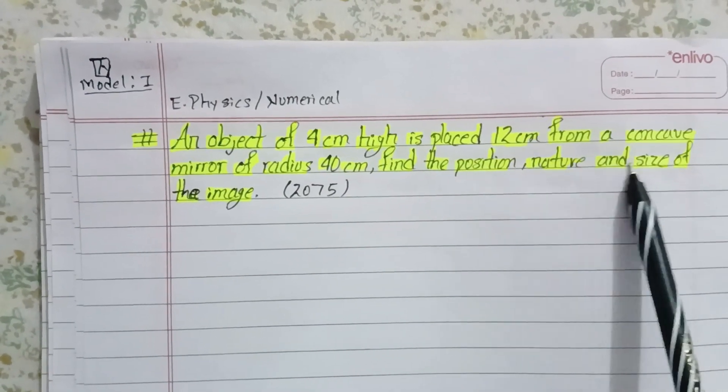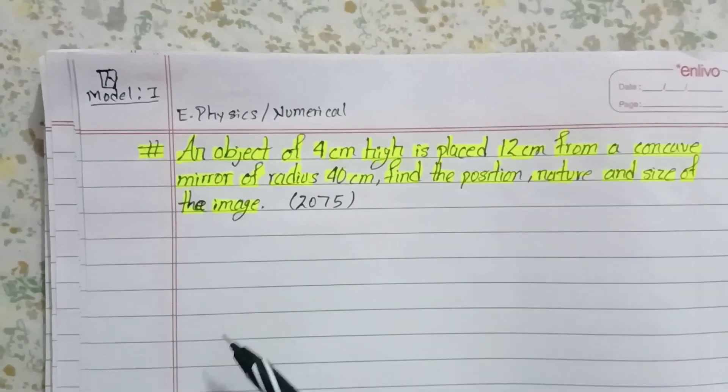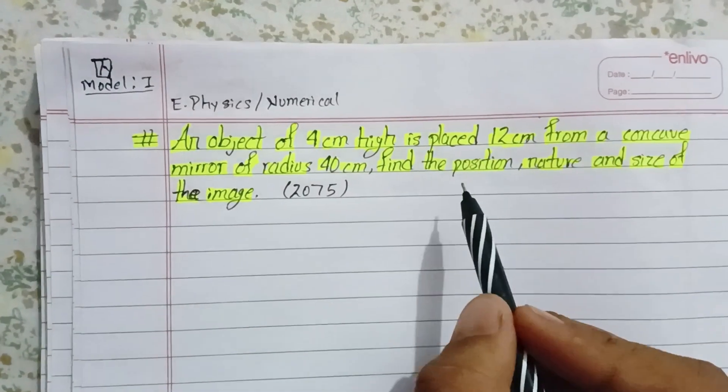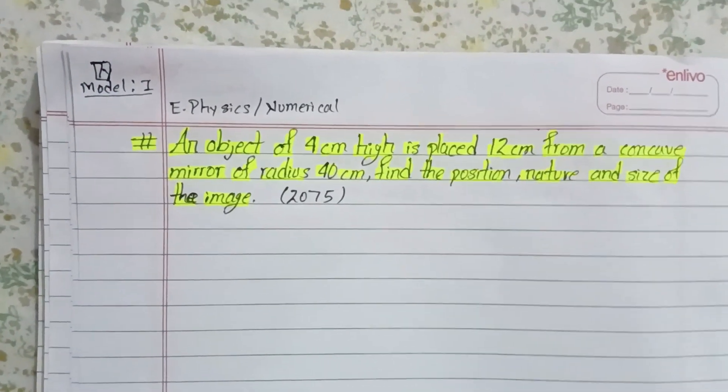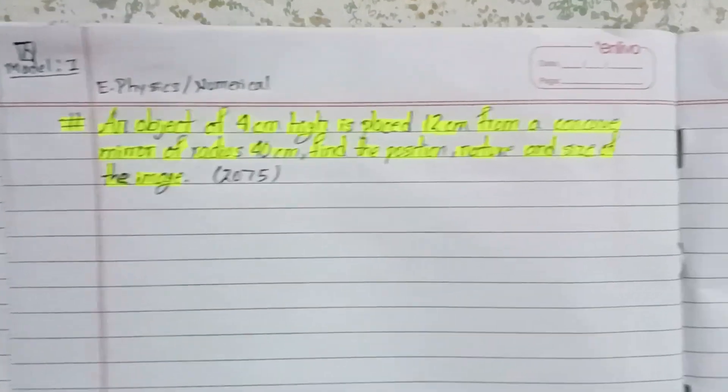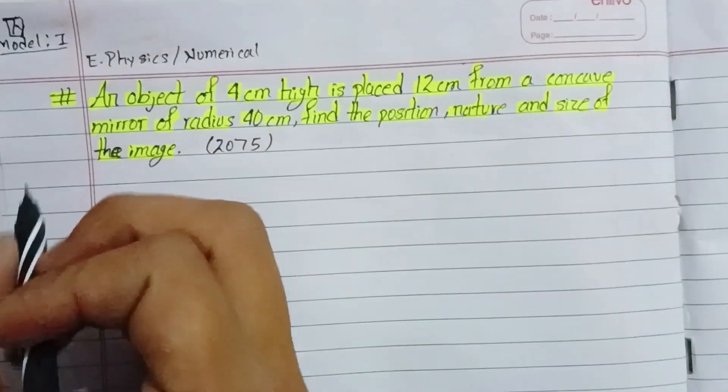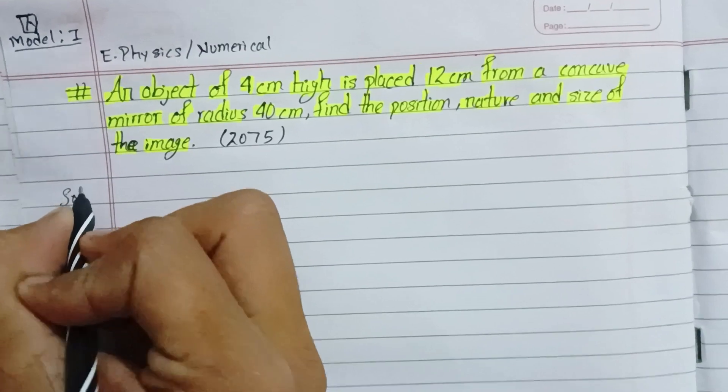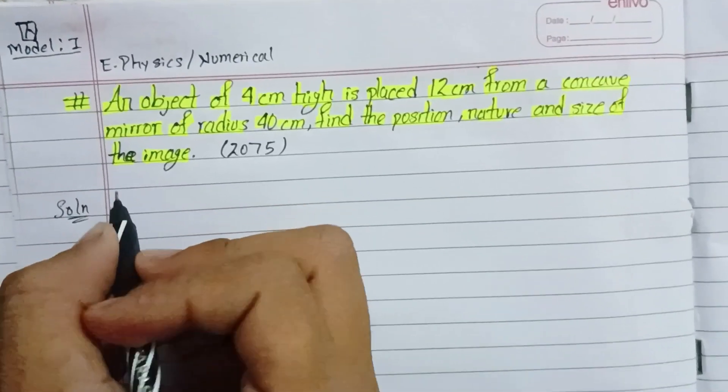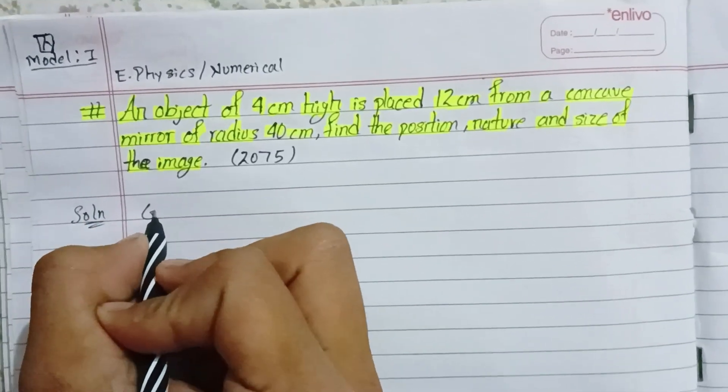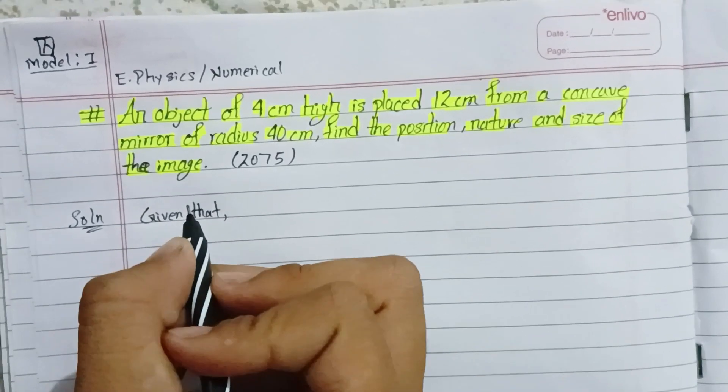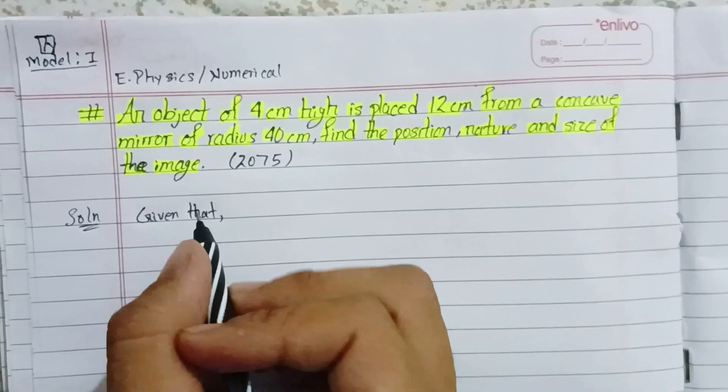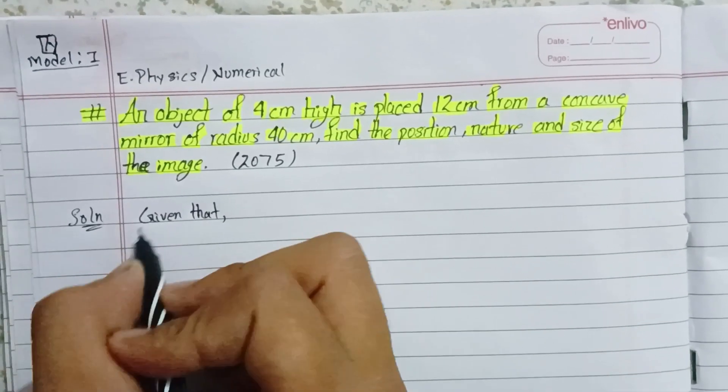Find the position, nature, and size of the image. Let me discuss the solution. Given that the height of object is 4 cm.